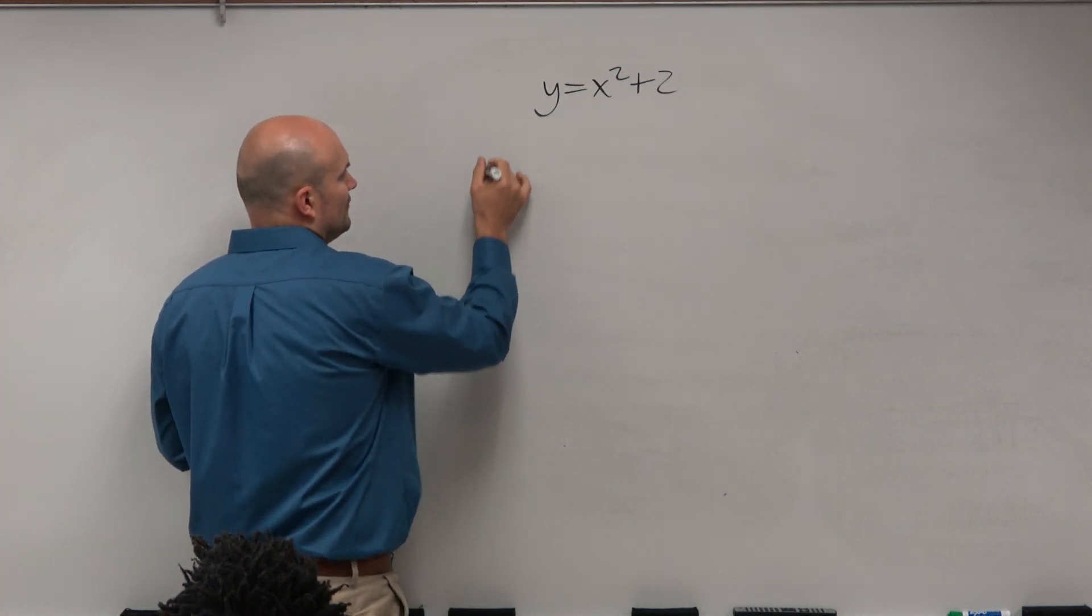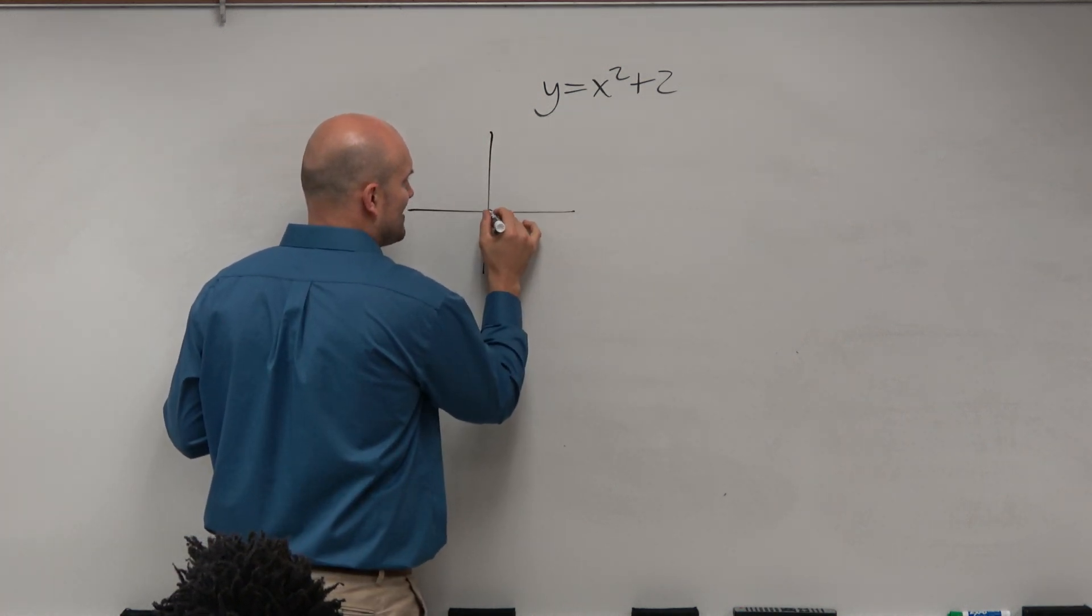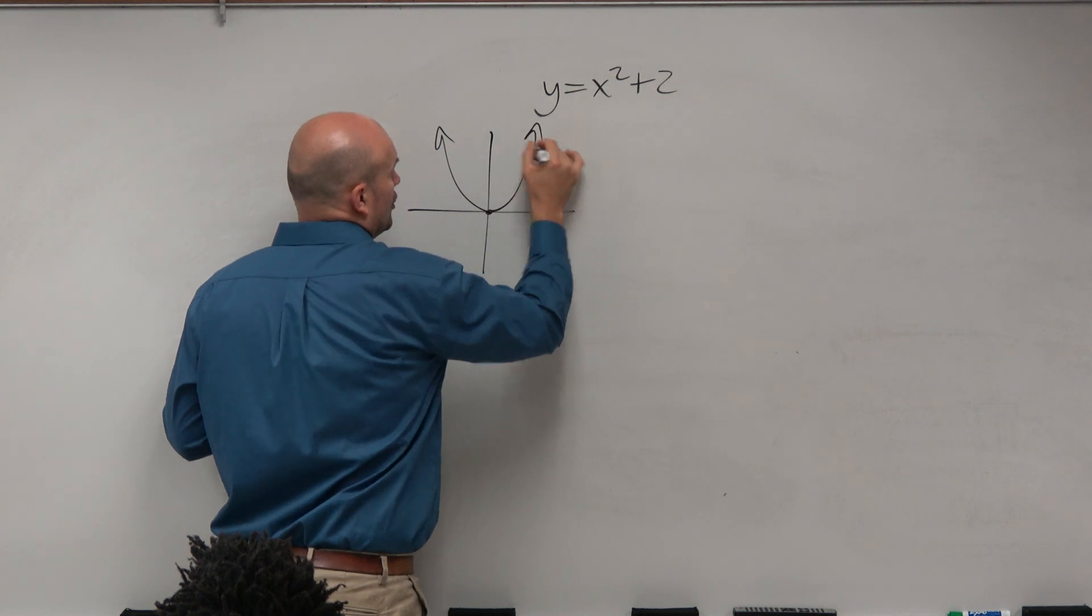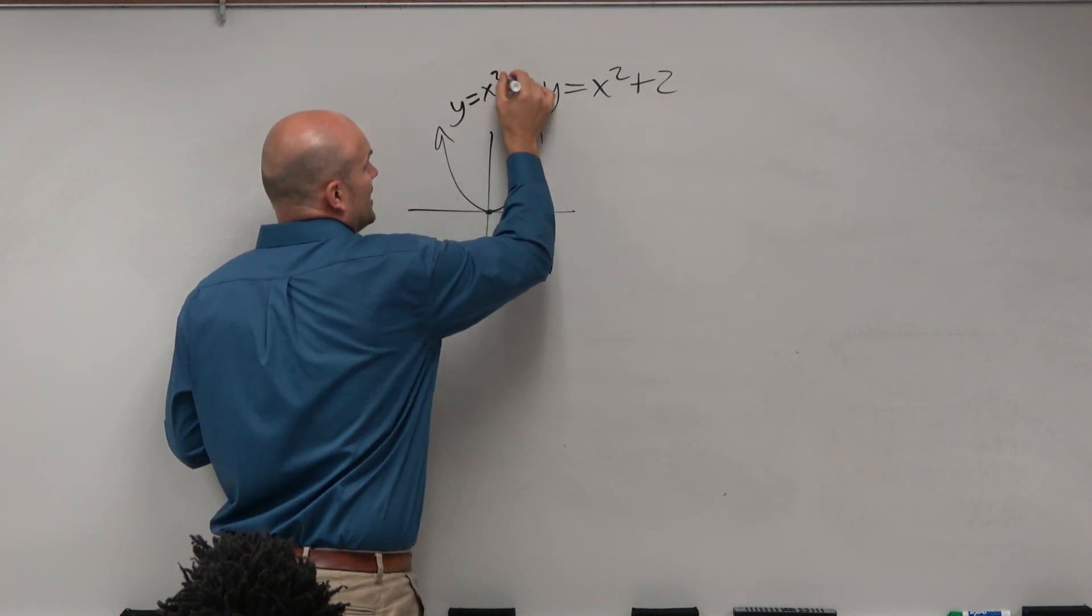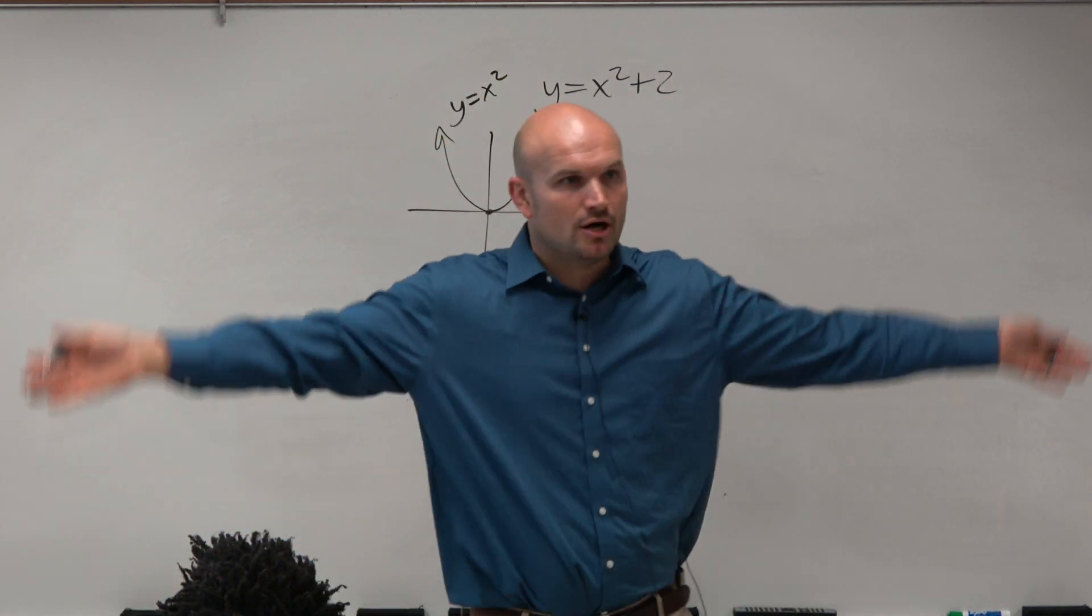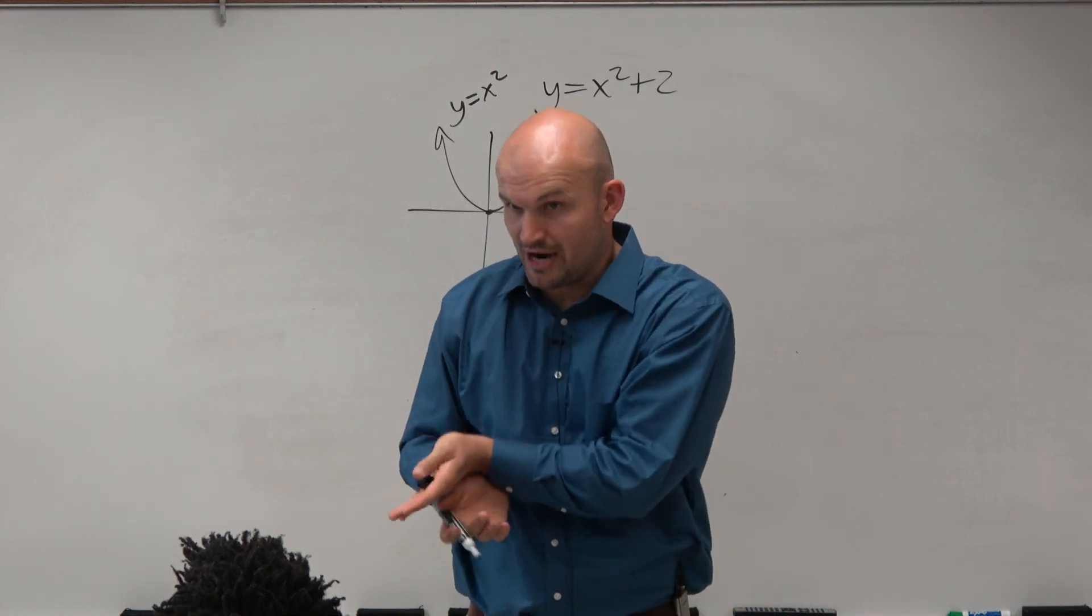There's two things you should know how to do. First of all, you should know what the parent graph is. Hopefully, you guys know y equals x squared looks like that. A nice little parabola opens up, also known as the u-shaped graph.